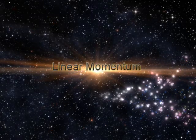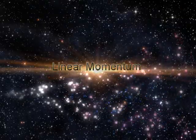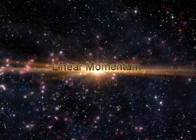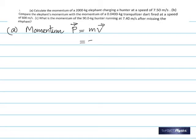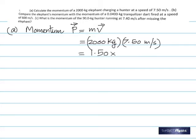Problems in momentum. Momentum is the product of mass and velocity. Part A: the mass of the elephant is given, velocity is given, multiply them to get the momentum. P is the symbol for momentum, and it's a vector having the same direction as velocity. You get 1.50 times 10 to the 4, which is 150,000 kilogram meter per second.